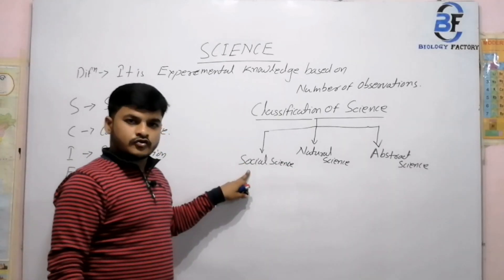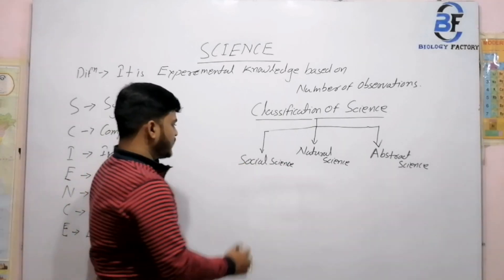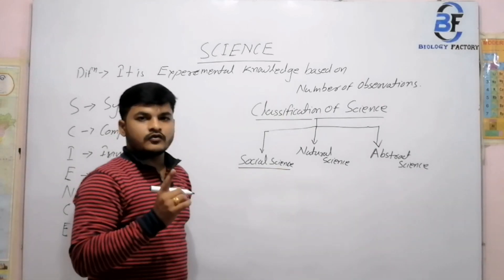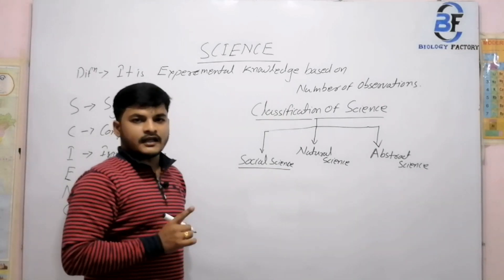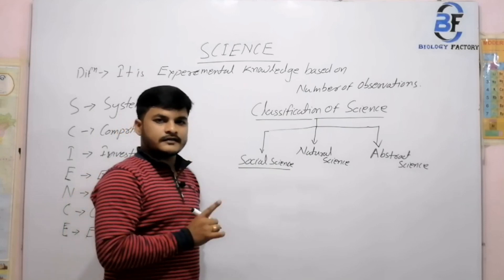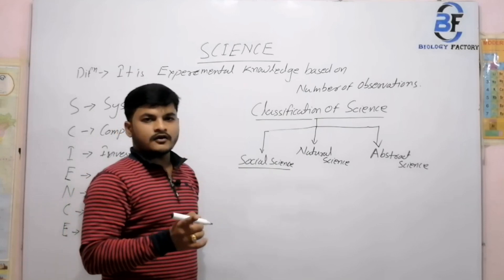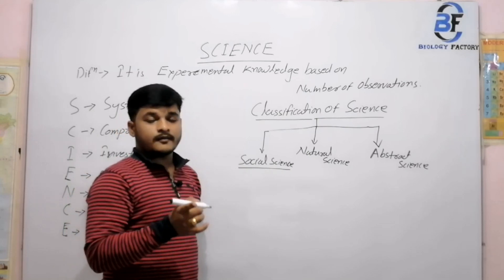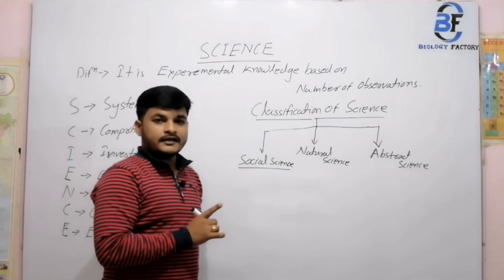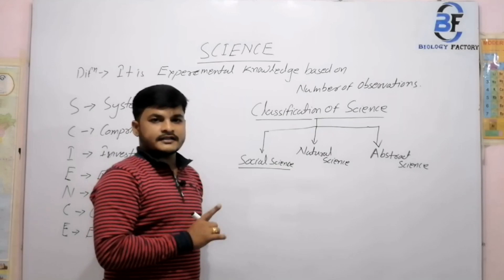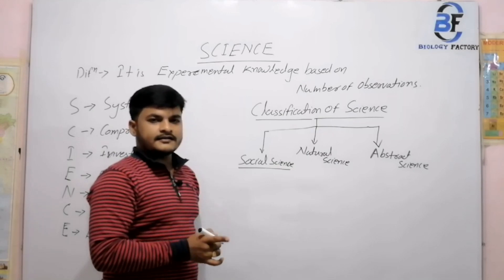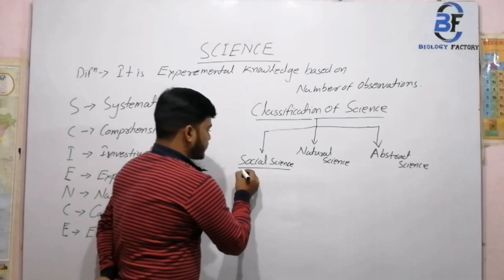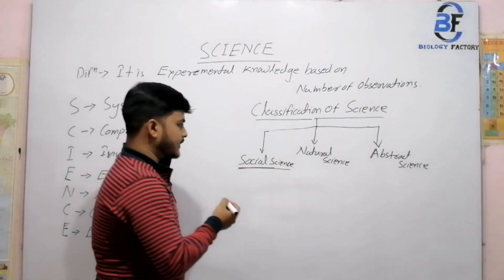If we talk about Social Science, the total part of social science is included in your past things. You may talk about history, you may talk about some types of religions, you may talk about politics — all these things. Political science and history are all related to your social science.